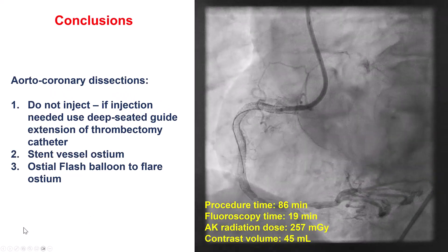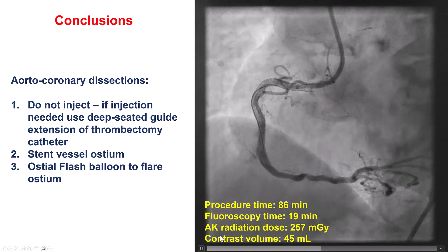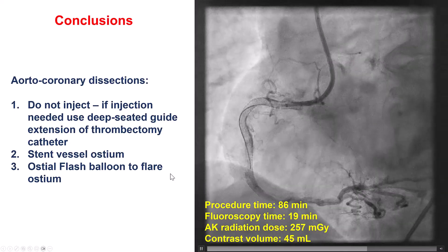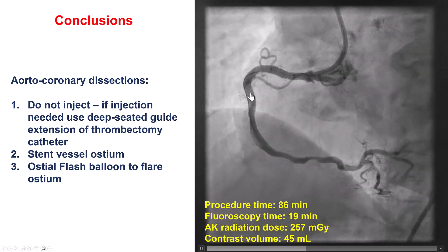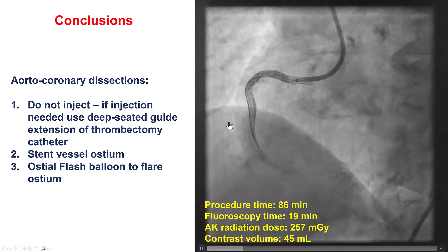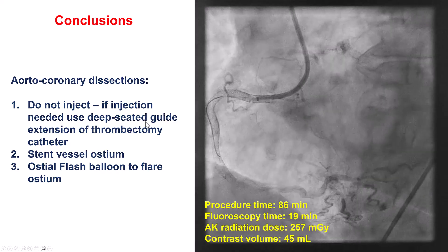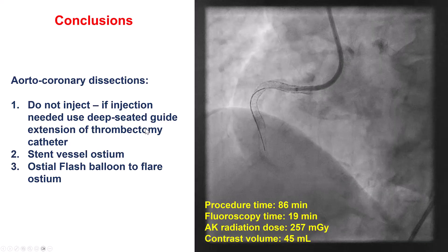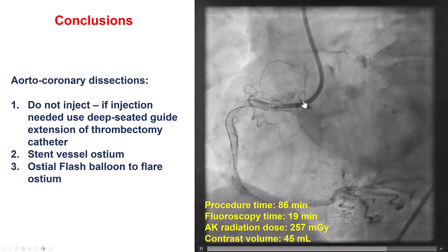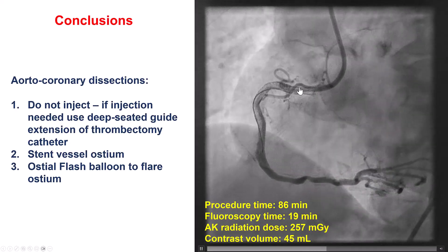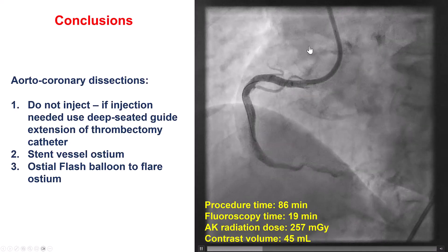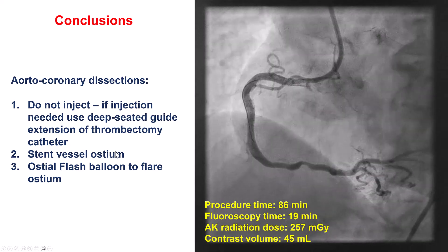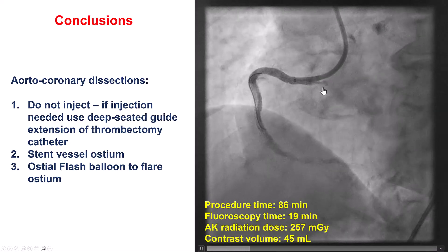A few lessons from this case. First, if we have an aortocoronary dissection, contrast injection should be avoided. If you have to visualize, one way is to use a guide extension, engage deeply into the coronary artery and inject through that, or use a thrombectomy catheter and inject through the over-the-wire lumen. To prevent the aortocoronary dissection from extending and causing more significant aortic dissection, it is important to stent the vestibule ostium and use intravascular ultrasound to confirm that the stent truly protrudes into the aorta.